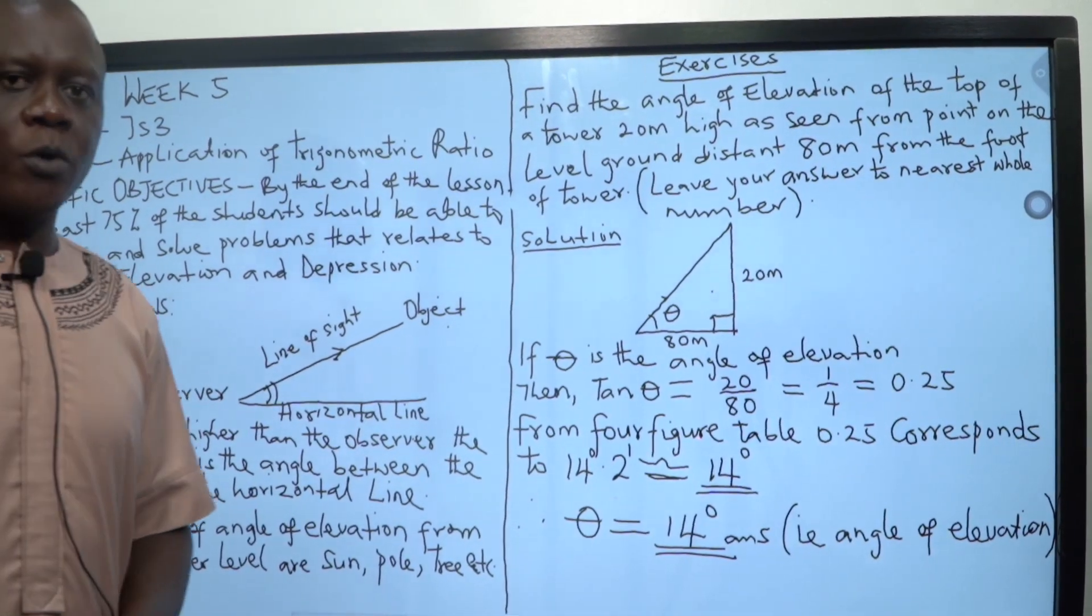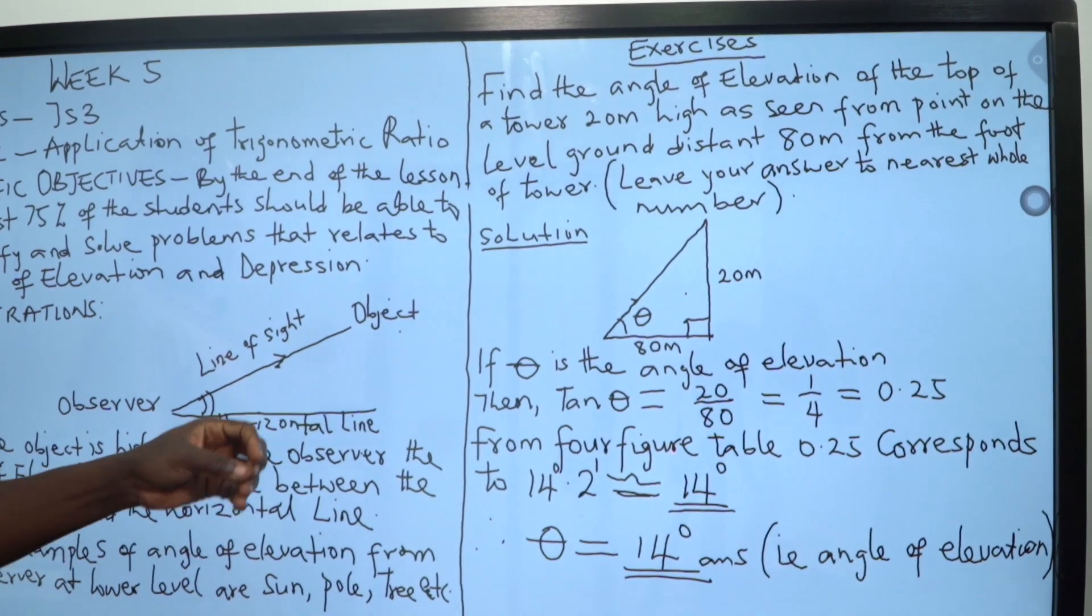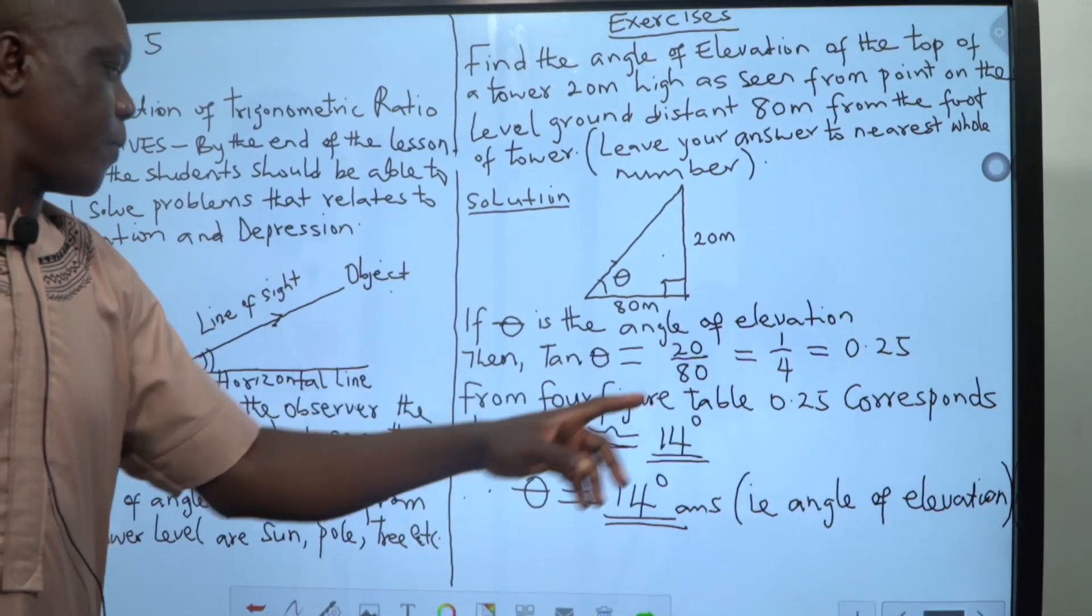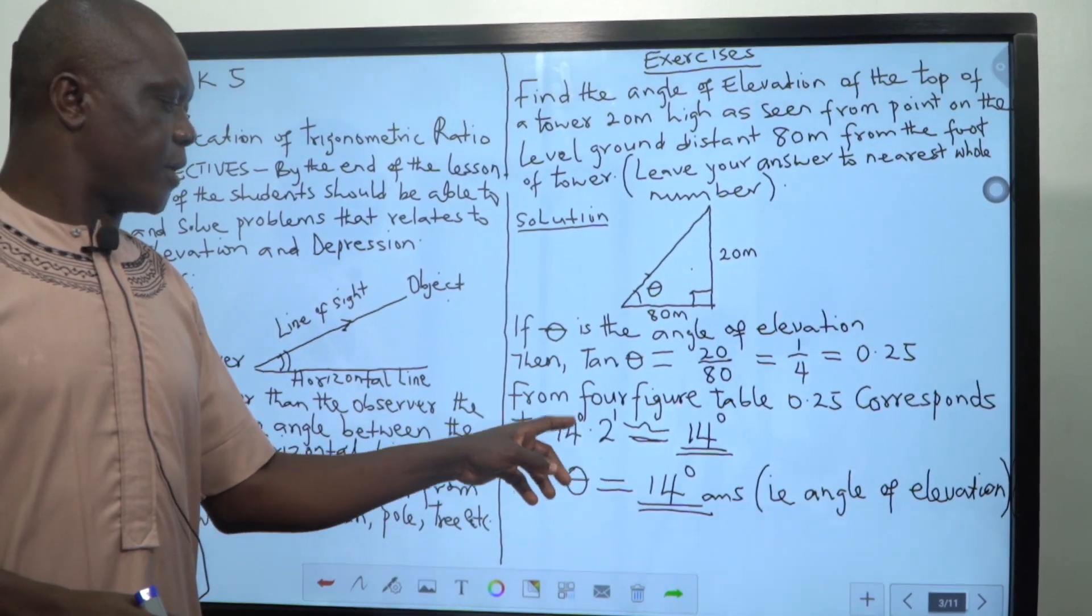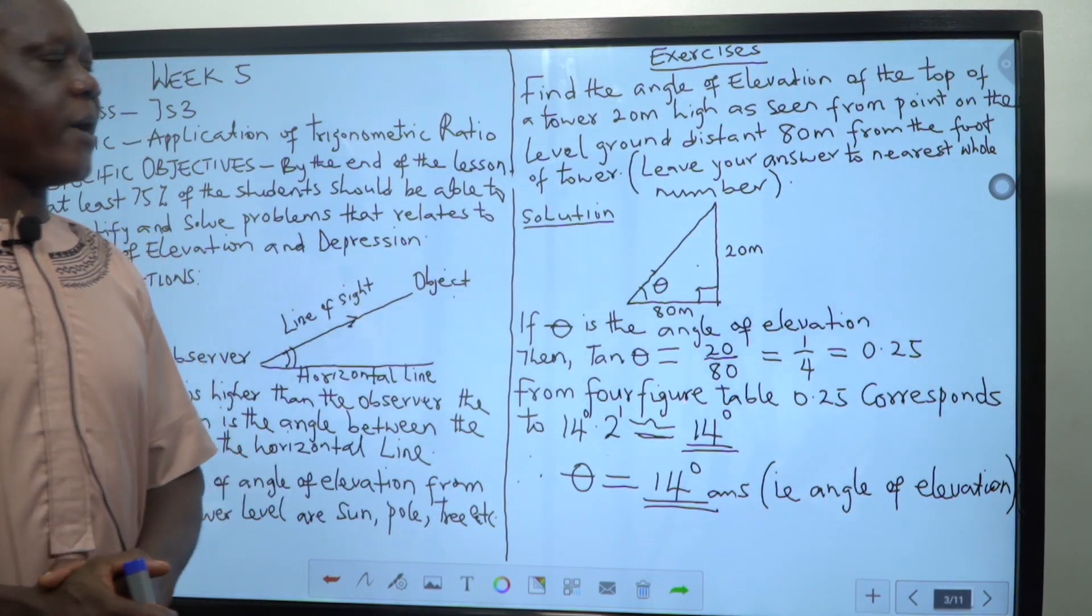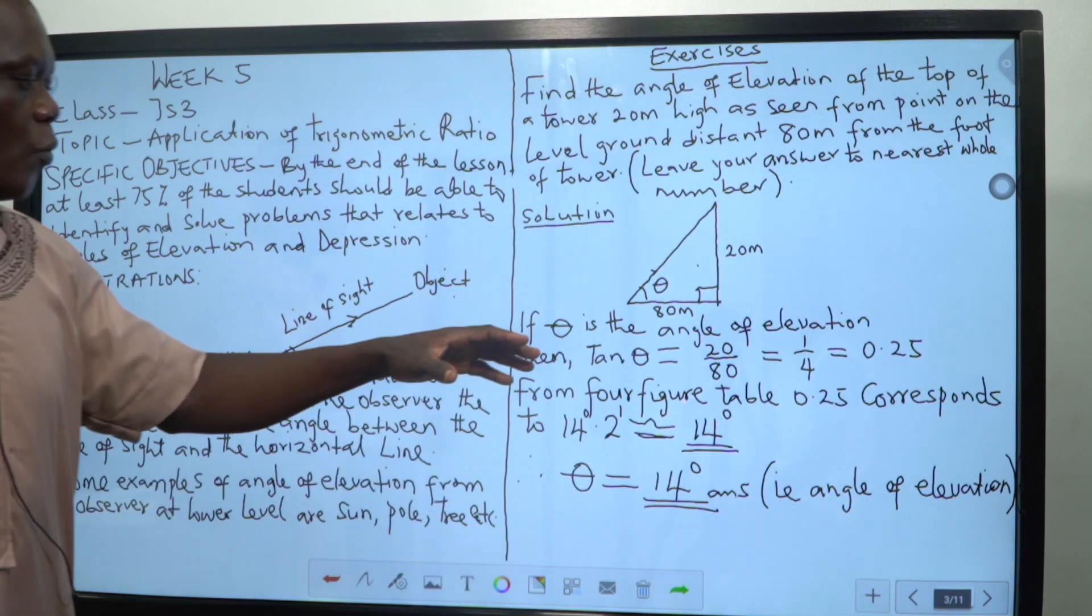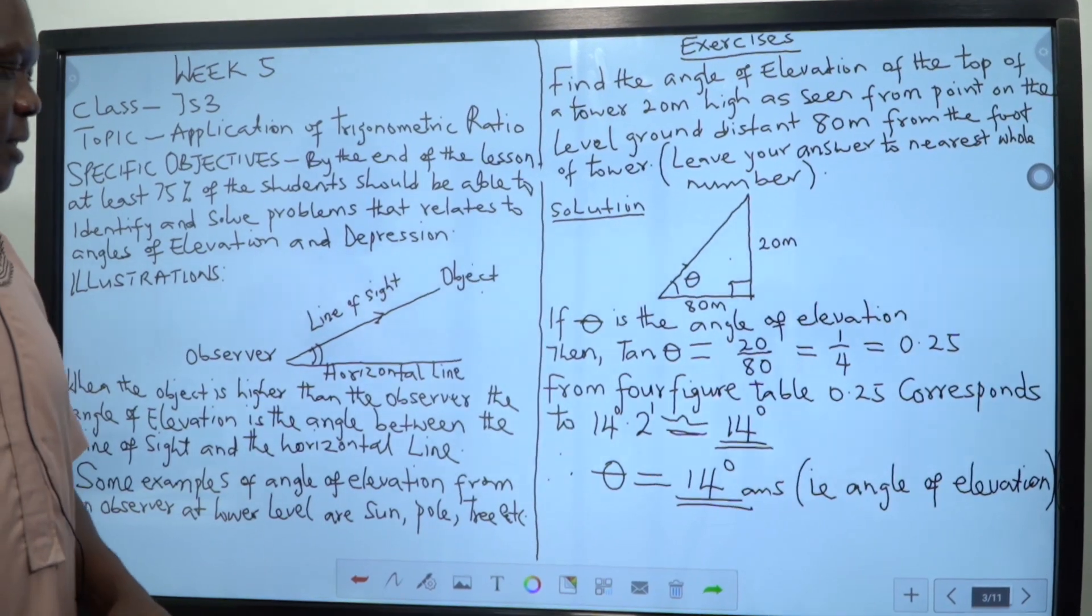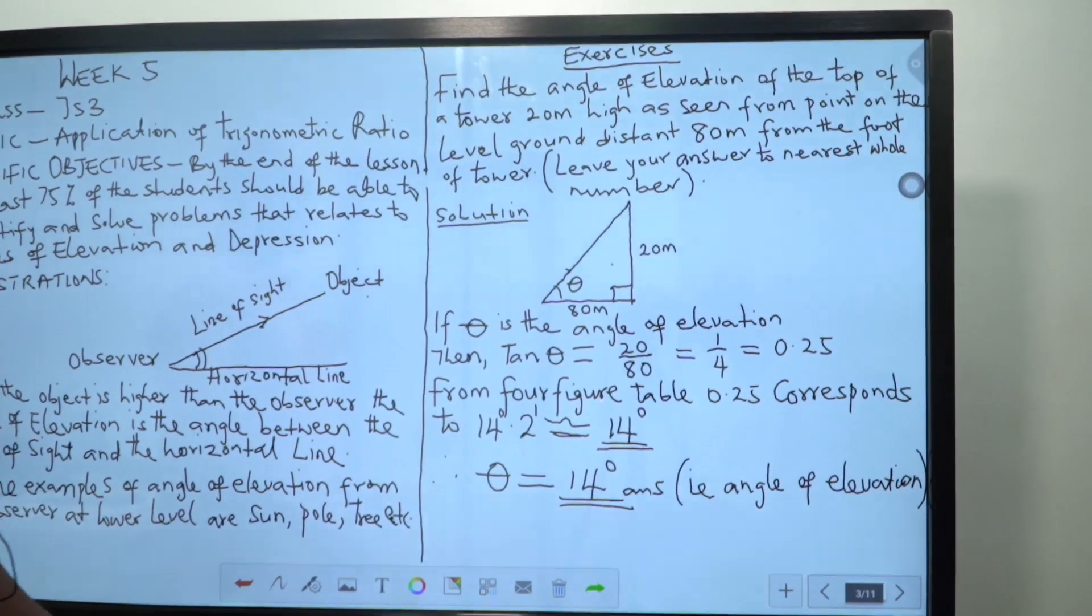But because we are looking for an angle, we will now consult our four-figure table, which I have even showed you how a number can be found. In your four-figure table, 0.25 corresponds to 14 degrees point 2 inches. But the question requires us to leave our answer to nearest whole number. These two inches is not up to 0.5, we wave it up. And that's why we say our answer is 14 degrees. Therefore, the angle of elevation is 14 degrees.